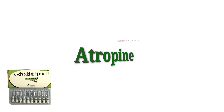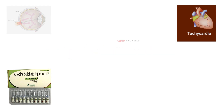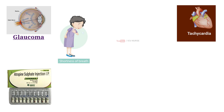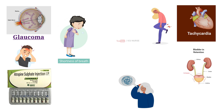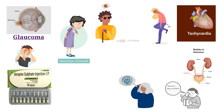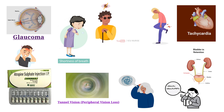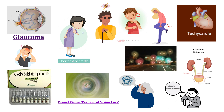Atropin may cause serious side effects including fast heart rate, high pressure in the eye (i.e. glaucoma), shortness of breath, severe headache, confusion, slurred speech, arm or leg weakness, and worsening urinary retention. Other serious symptoms include sudden vision loss, blurred vision, tunnel vision, eye pain or swelling, or seeing halos around lights.